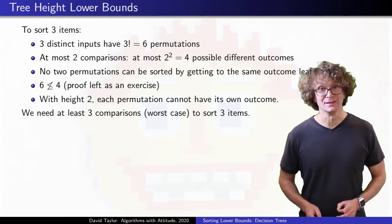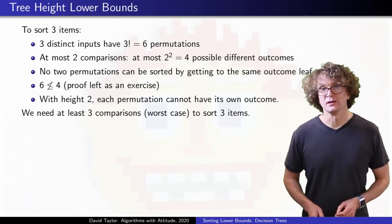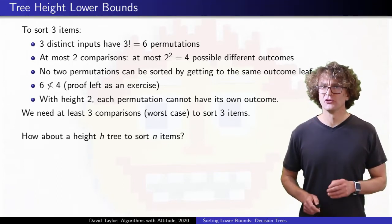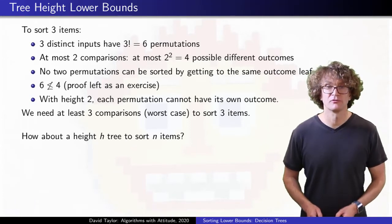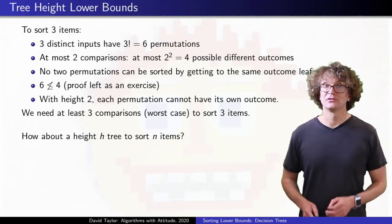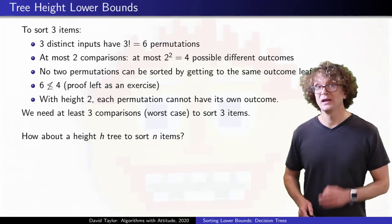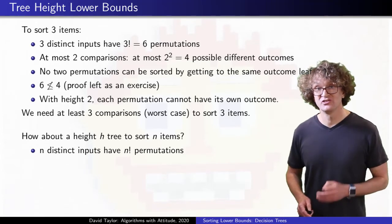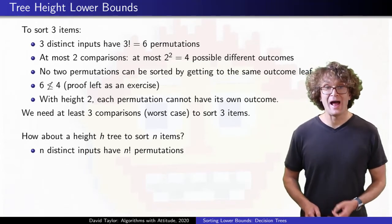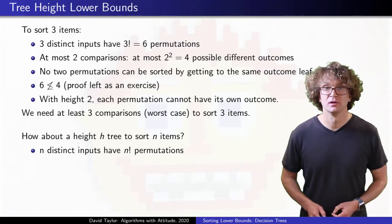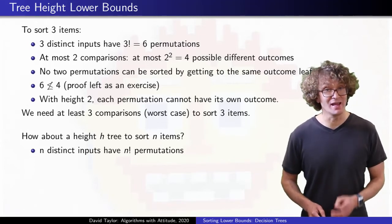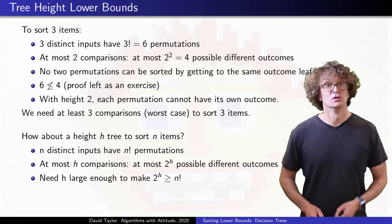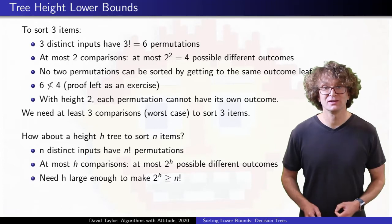Finally, to the finale, we don't want to sort just three items, we want to sort n items. Great. Assume that you have some comparison-based sorting algorithm for sorting n items. Instead of just six permutations, n items can come in n factorial permutations, so the decision tree for the algorithm will have to have at least n factorial leaves. If the decision tree's height is h, it will have at most two to the h leaves.